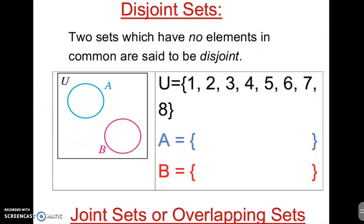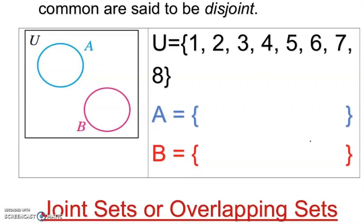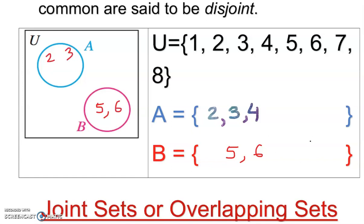Now, disjoint sets: set A is disjoint from set B. This is my universal set. I'll put some numbers in set A — two, three, four — and in set B — five, six. So five and six are in set B, and two, three, four are in set A. They have no common number. The rest of the elements are outside both sets. This is called disjoint — they are not joint, there is no common element.